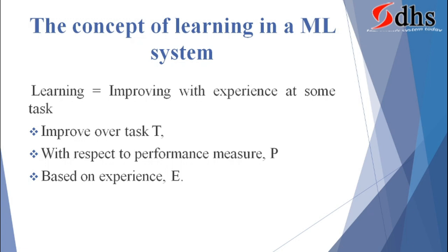The concept of learning in a machine learning system: the definition is that learning equals improving with experience at some task. Example: you are going to write an exam — that writing is the task T. You get a mark — that is the performance measure P. Based on your mark you gain experience E: 'I did this correctly' or 'I need to prepare another way.' That experience improves your next learning and improves performance next time. It is a chain process until you reach the optimum solution. That is the definition of machine learning.